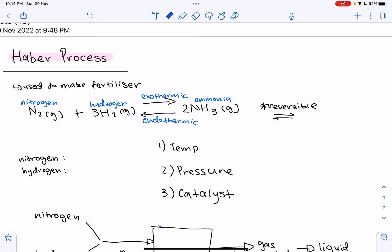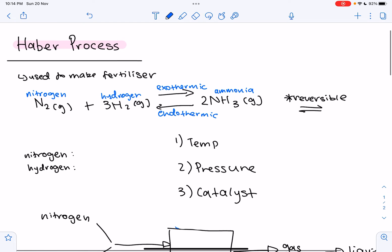So the Haber process is used to produce ammonia gas, which is then used to create fertilizers, which can be used for lots of different things, as we know. So first up, let's look at the equation of the Haber process.